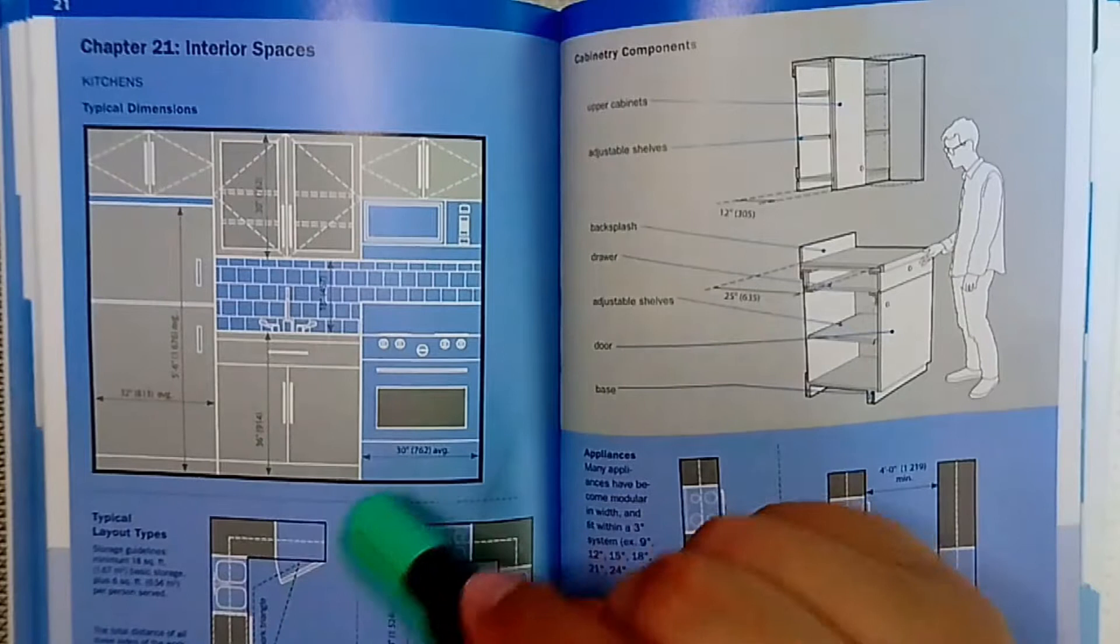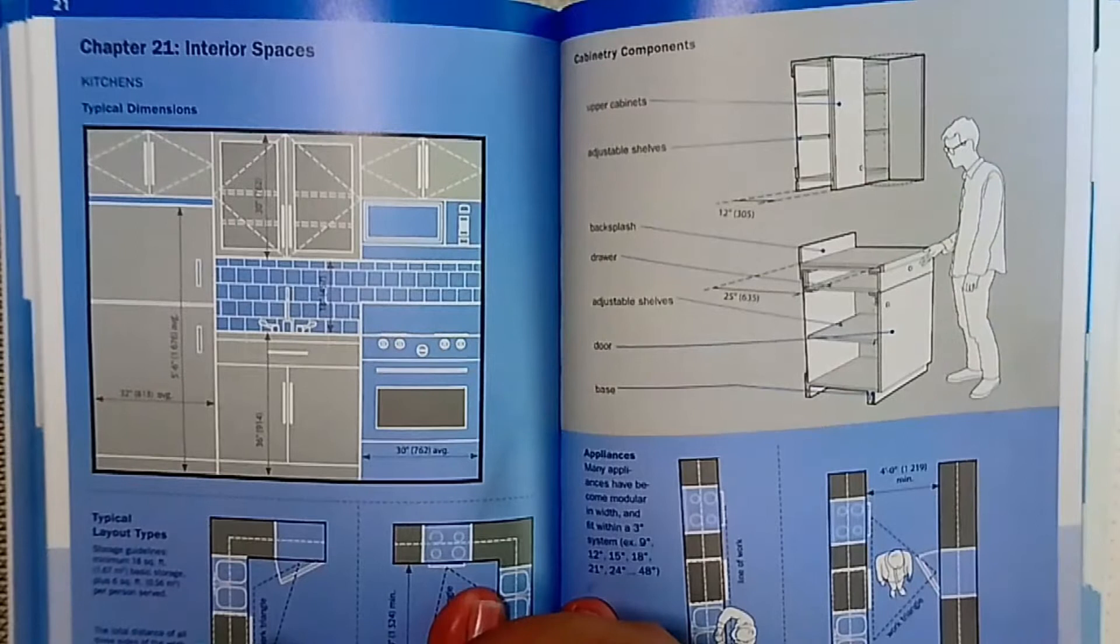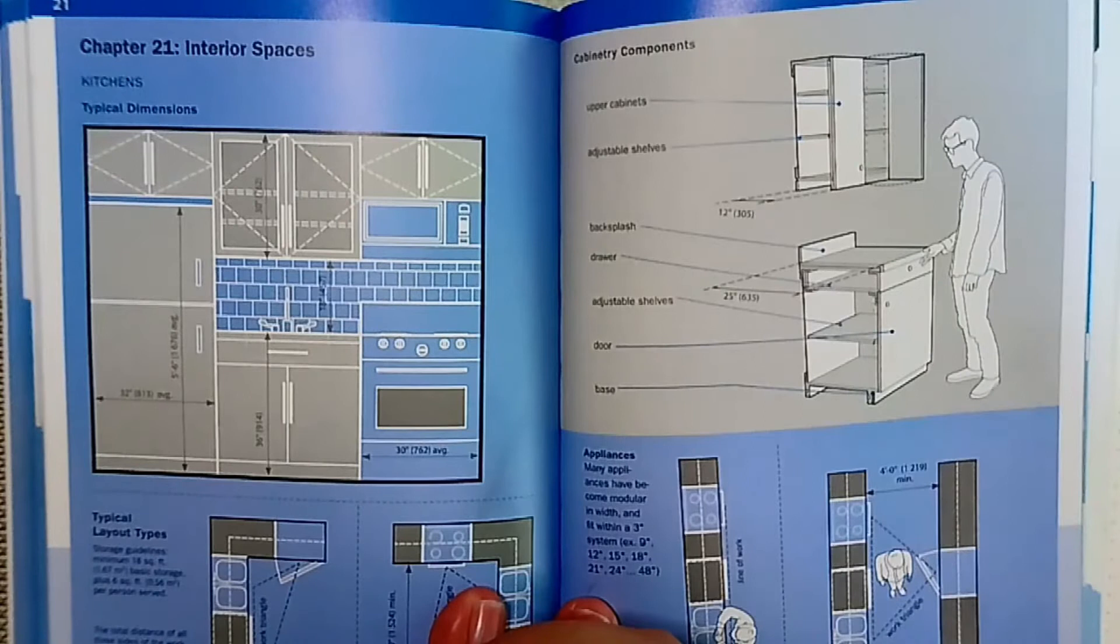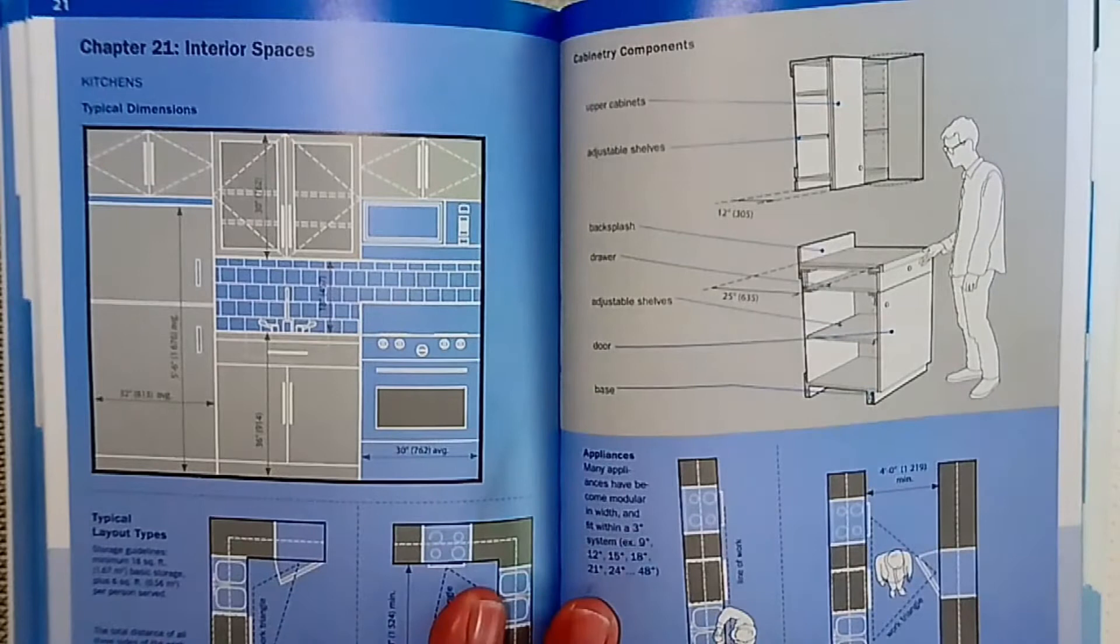The typical refrigerator width is 0.813 meters with a typical height of 1.676 meters. If you did your elevation this way you're on the right track. As students, you're bound to make mistakes, but what's important is that you correct those mistakes as you move along.